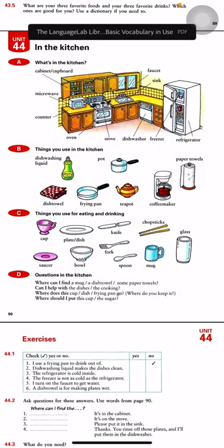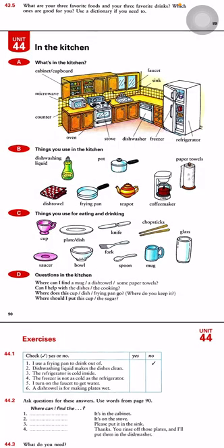Unit 44: In the Kitchen. What's in the kitchen? Cabinet or cupboard, faucet, sink, microwave, counter, oven, stove, dishwasher, freezer, and refrigerator.